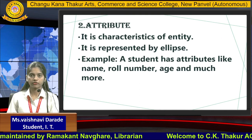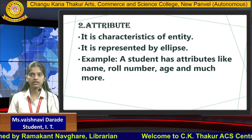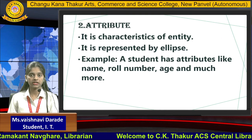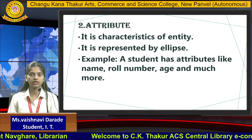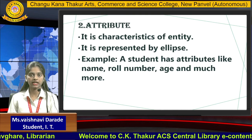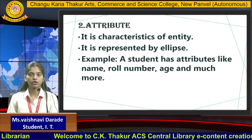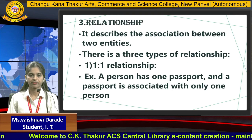Second, attribute. What is an attribute? It is a characteristic of an entity. It is represented by an ellipse. For example, a student has attributes like name, roll number, age, and much more.